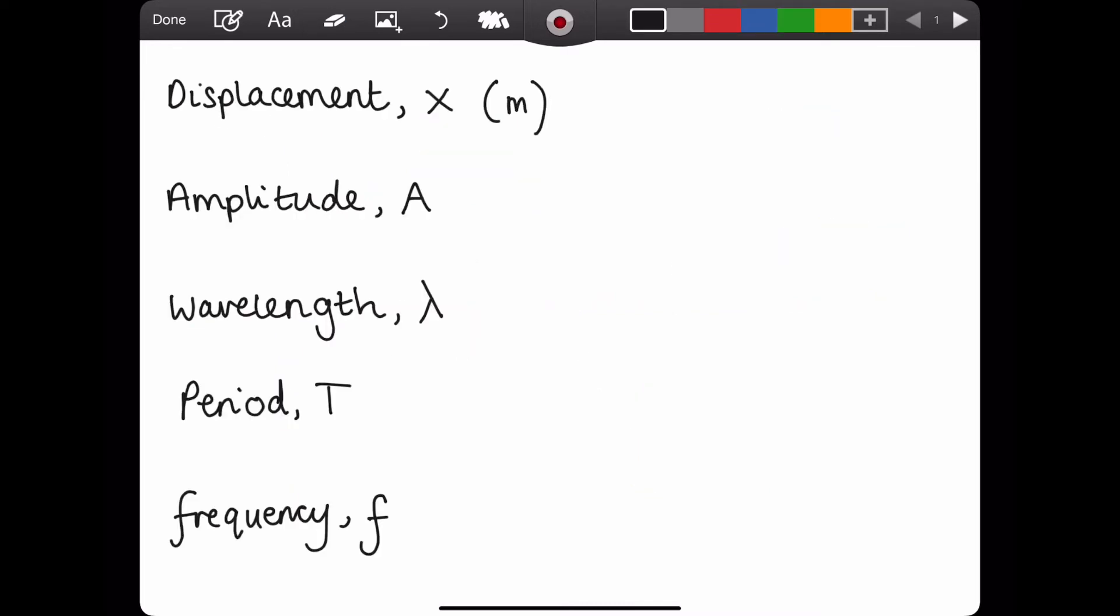You also need to know the definitions. So starting with displacement, symbol x measured in meters. This is how far a point on the wave has moved from the undisturbed position. Important, it's how far a point on the wave has moved, not the wave itself.